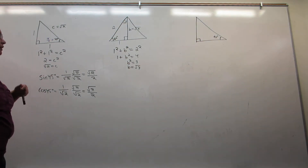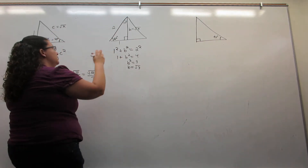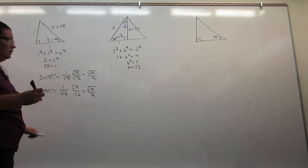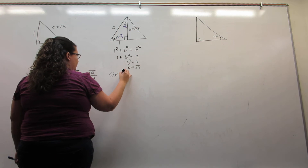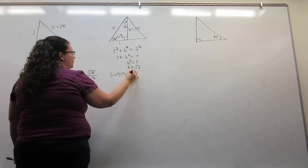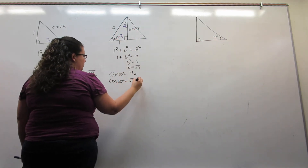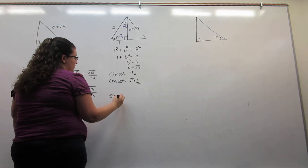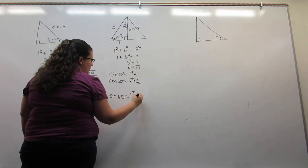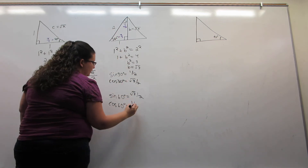From this single triangle, I can now figure out the sine and cosine of both 60 degrees and 30 degrees. 60 degrees is pi over 3 radians and 30 degrees is pi over 6 radians. So for 30 degrees, the sine of 30 degrees is opposite over hypotenuse: 1 half. The cosine of 30 degrees is adjacent over hypotenuse: square root of 3 over 2. And the cosine of 60 degrees is adjacent over hypotenuse: 1 half.